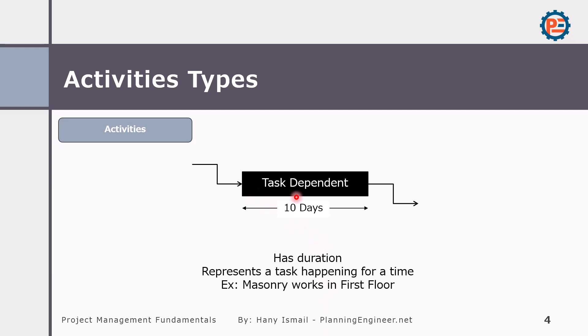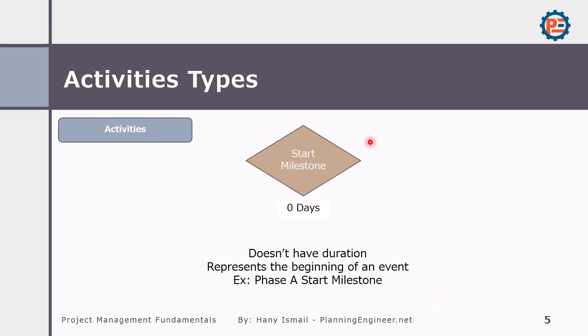The task dependent activity has duration and represents a task happening over a period of time. For example, masonry work on the first floor. This is the most used activity type in our time schedule. The start milestone does not have duration — it represents the beginning of an event. For example, Phase A start milestone or project start date. You can represent important dates using a start milestone.